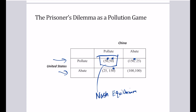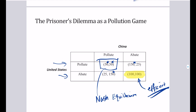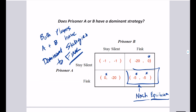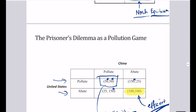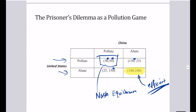The efficient outcome — the one that maximizes net benefits or welfare — is that both abate, with combined payoffs summing to 200, which is higher than any other cell. Similarly, in the prisoner's dilemma, both staying silent gives the best collective outcome of one year each. But the Nash equilibrium has them both getting five years. There's a fundamental tension between what is collectively or efficiently optimal and what is individually optimal.